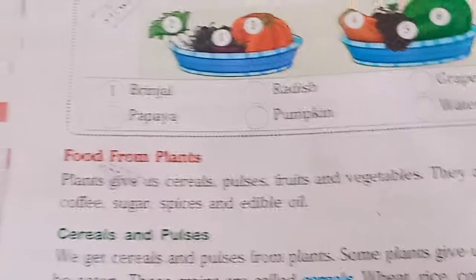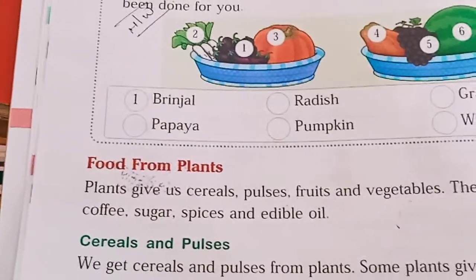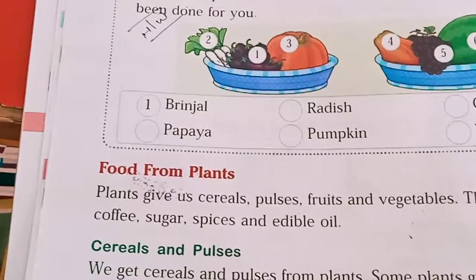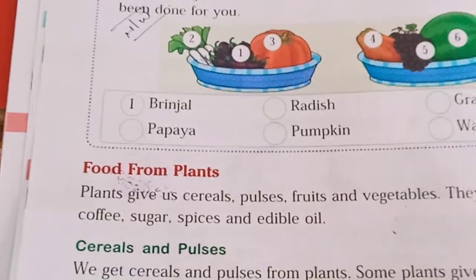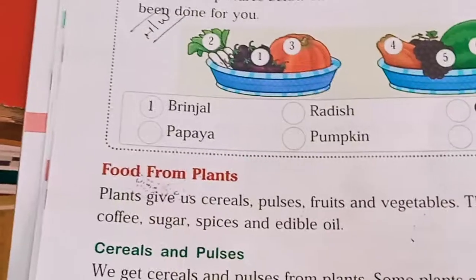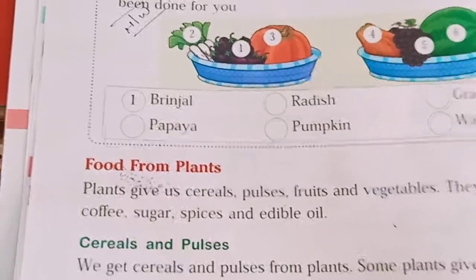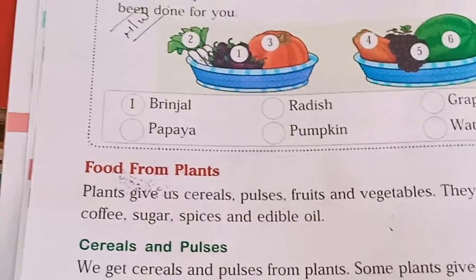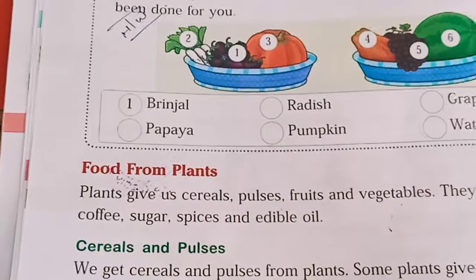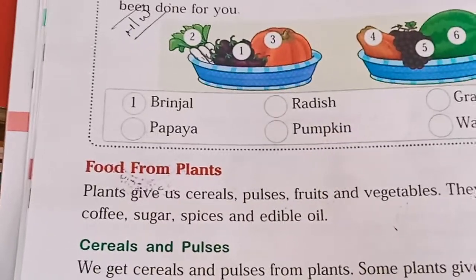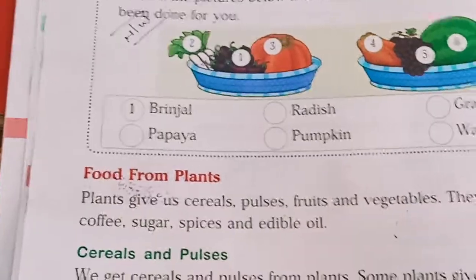So we have cereals, which are good for health. We eat a lot of cereals. For example: rice, wheat, corn, and barley — these are all cereals.